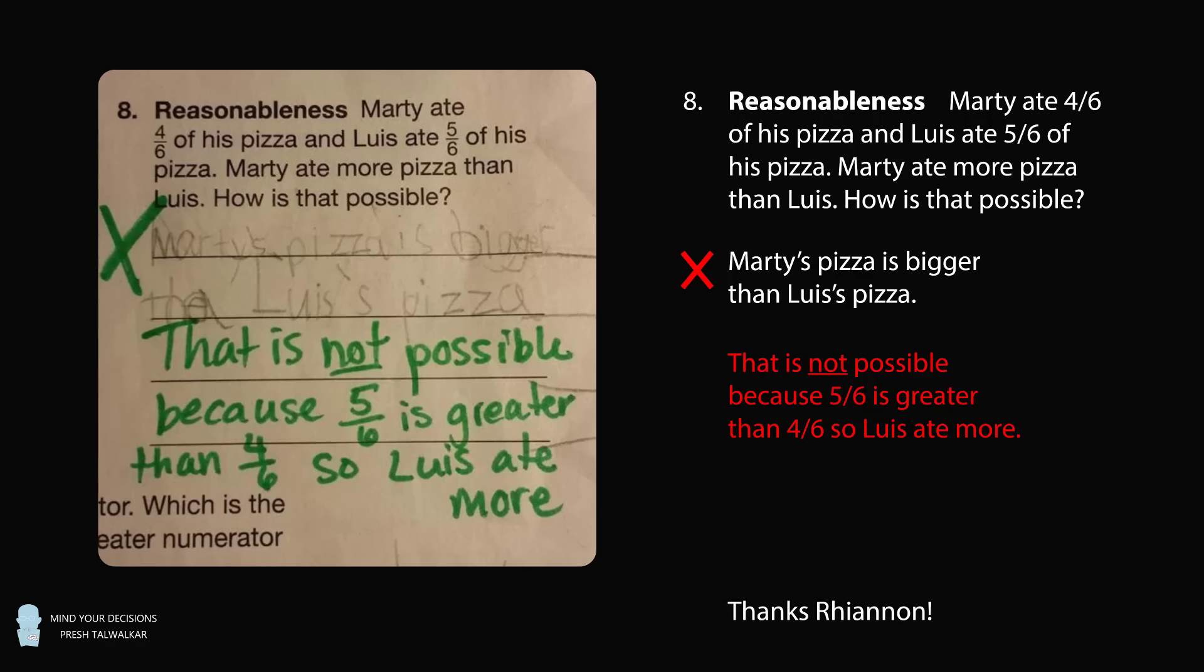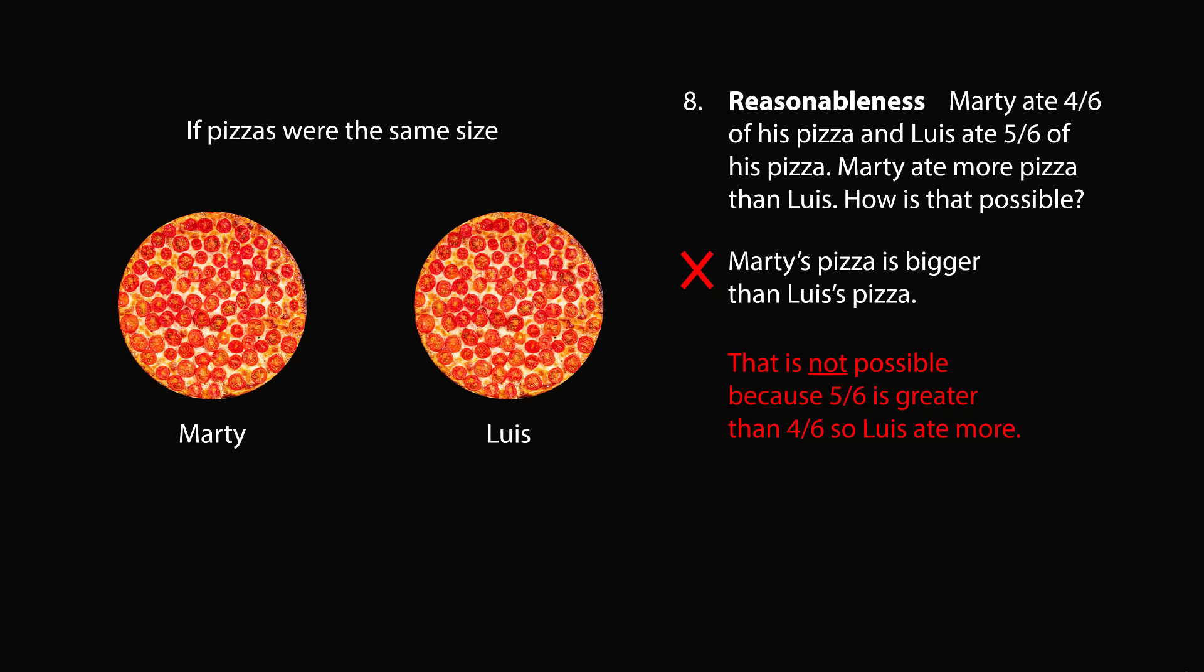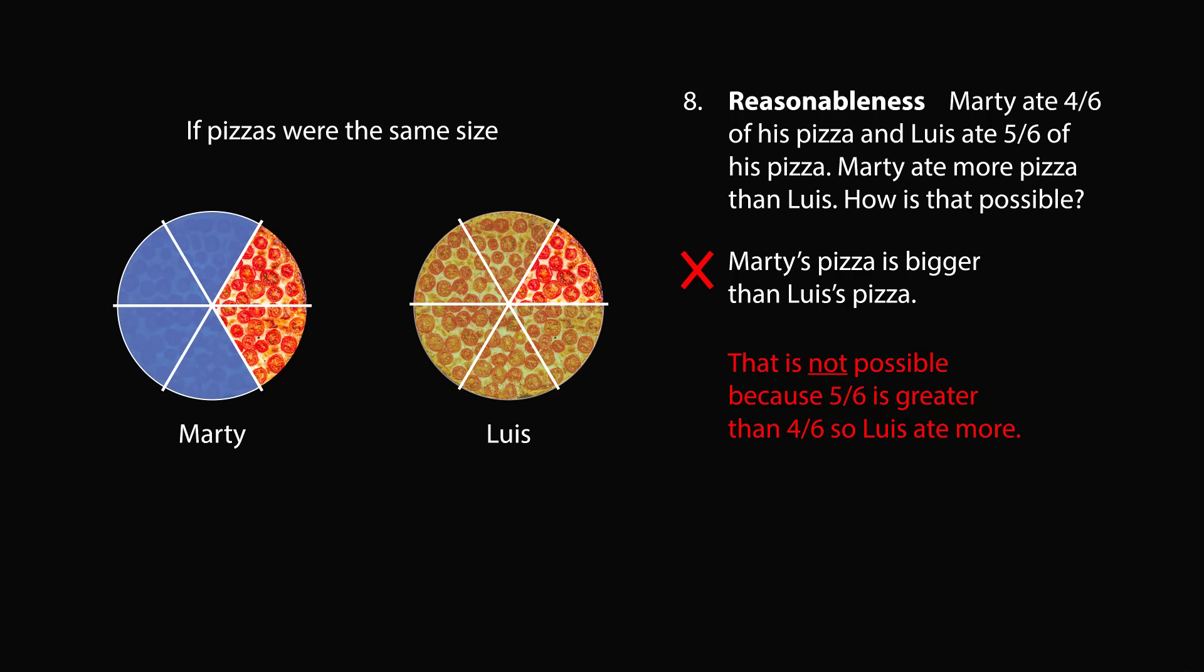I thank Rhiannon for the suggestion. Now let's just try to reason what the teacher might have been thinking. If the pizzas were the same size, we could compare Marty's pizza to Luis's pizza. Let's divide both pizzas into 6 slices. Now 4/6 of the pizza will be 4 of the slices, and then 5/6 of Luis's pizza will be 5 of these slices. So clearly, there's no way that Marty could have eaten more than Luis if the pizzas were the same size.